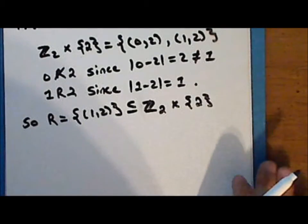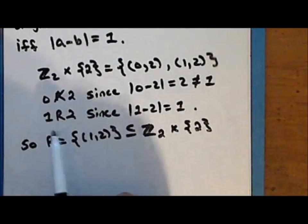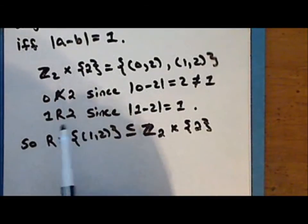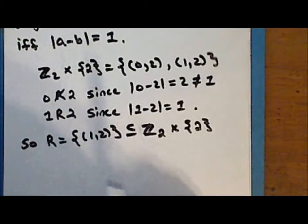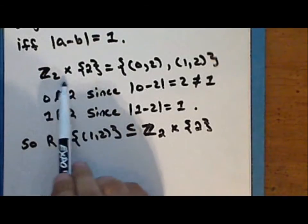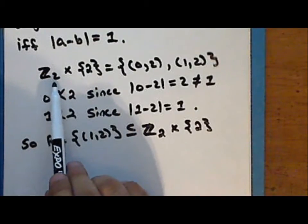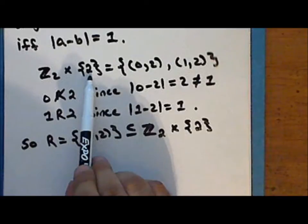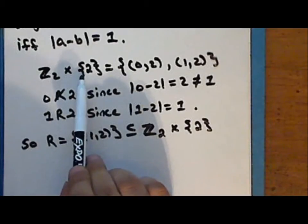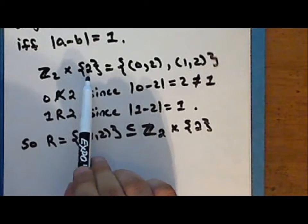Notice that in this example, the number 1 is related to the number 2, but order does matter. The number 2 is not related to the number 1 since the ordered pair (2, 1) is not in the Cartesian product of the set of integers modulo 2 with the singleton set containing 2. So there are no subsets of this Cartesian product which contain the ordered pair (2, 1).